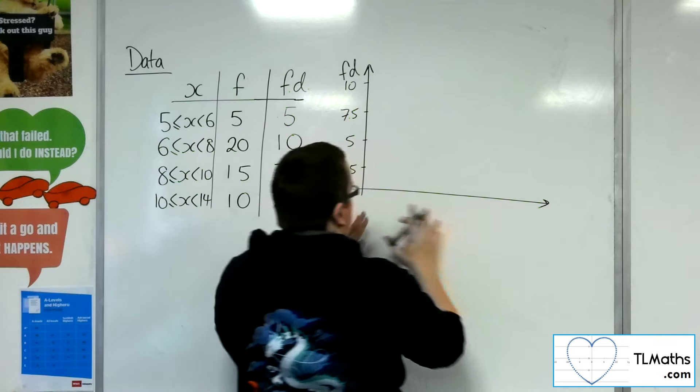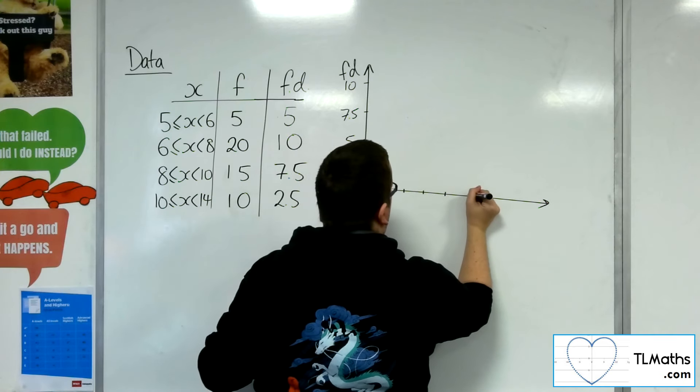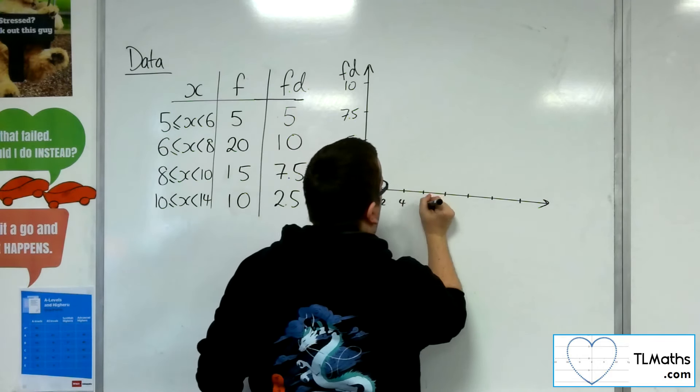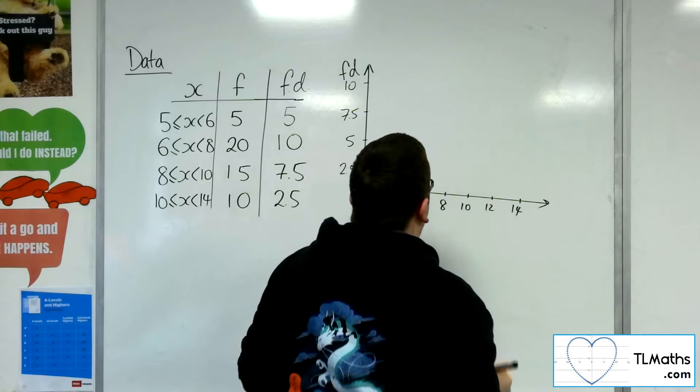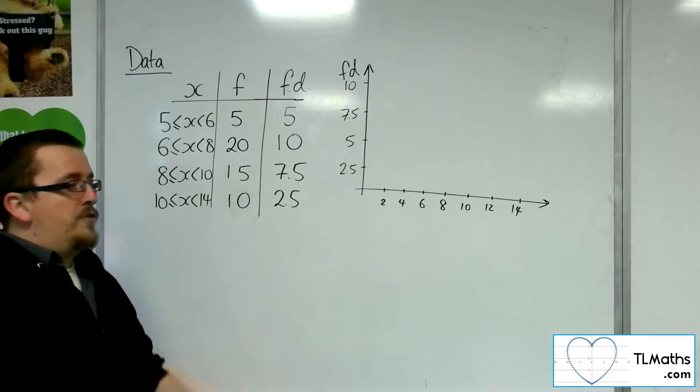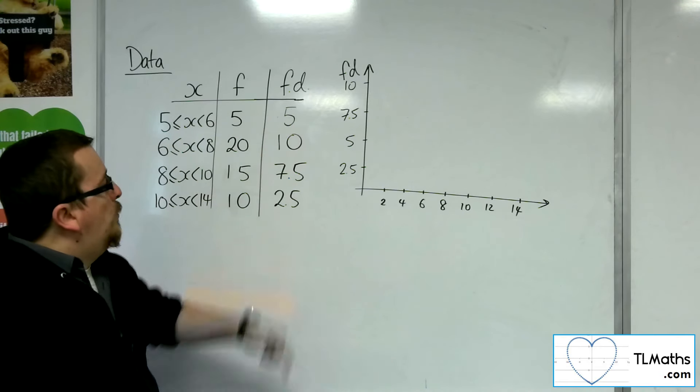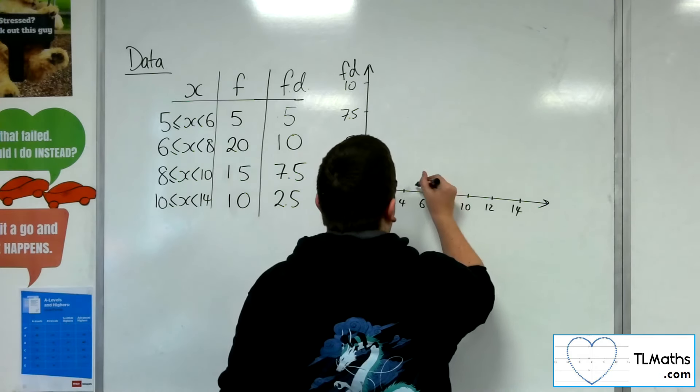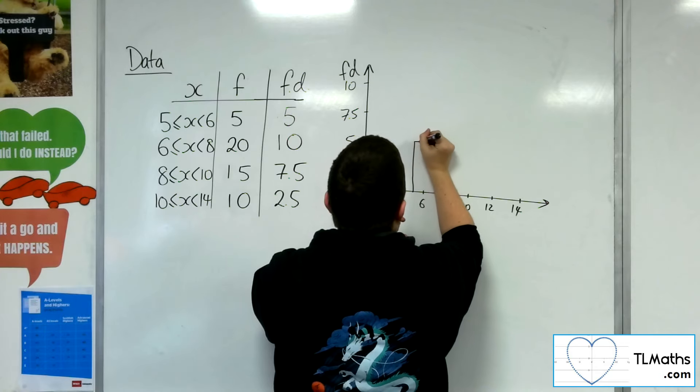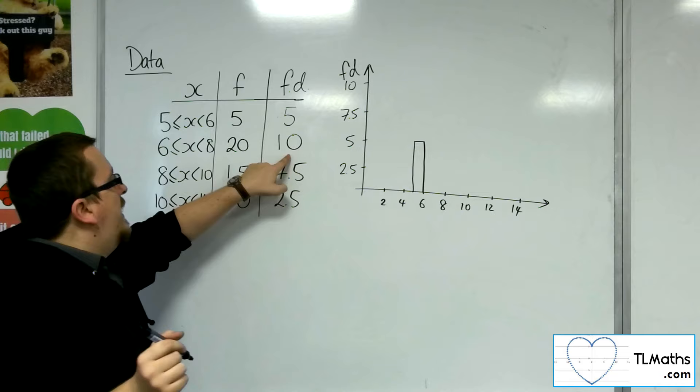So I did it quite narrow last time, didn't I? So 2, 4, 6, 8, 10, 12, 14. A little bit better there. So 2, 4, 6, 8, 10, 12, 14. It's kind of slanting down a bit. That's okay. Obviously, if you were doing it on paper, it would be a bit more accurate. I'd hope so, anyway. So 5 to 6, we were at 5. So 5 to 6 at 5, like so. Then from 6 to 8, we're at 10.